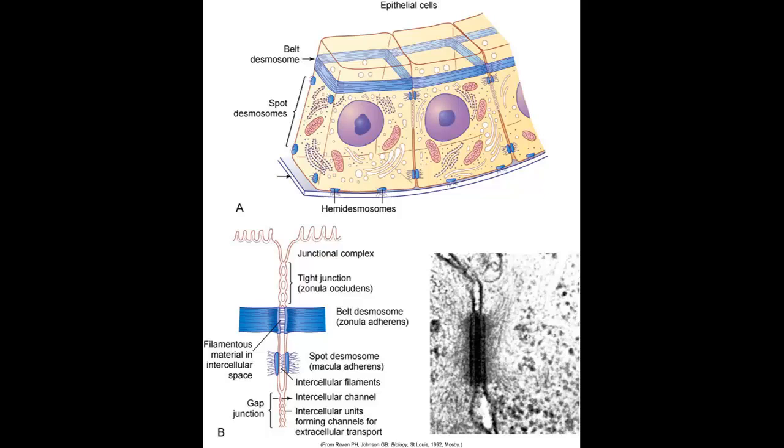When cells bind together, there's a junctional complex. Epithelial cells can bind with something called a belt desmosome, which holds cells together like a belt. There are also spot desmosomes, like sticky tape on the side of the cell. A tight junction is when belt desmosomes combine to hold two components tightly together — it's almost like the two cells are glued together.